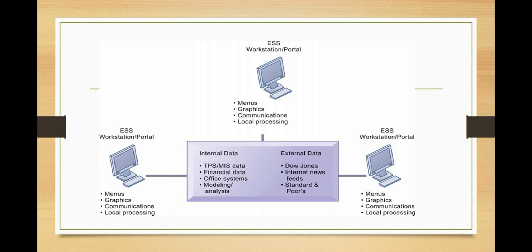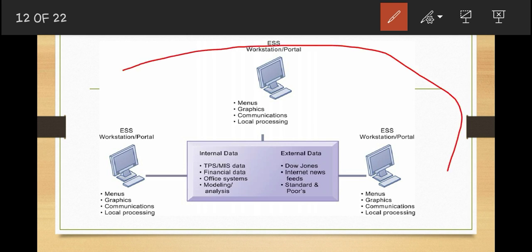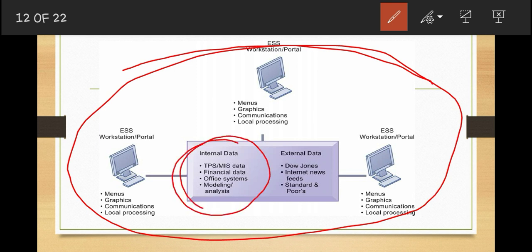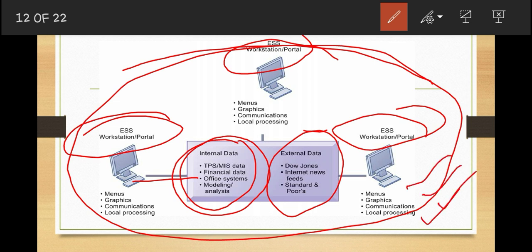Executive support systems incorporate data about external events such as new tax laws or new competitors. They also draw summarized information from MIS and DSS, filter this information, compress and track critical data, and display it in the most useful form for senior managers. ESS normally present graphs and data from many sources through an easy-to-use interface. Often this information is delivered to senior executives through a portal — a web interface that presents integrated, personalized business content. The system pulls data from diverse internal and external sources, including TPS, MIS, financial data, office systems, modeling data, and external sources, providing menus, graphics, communication, and local processing.